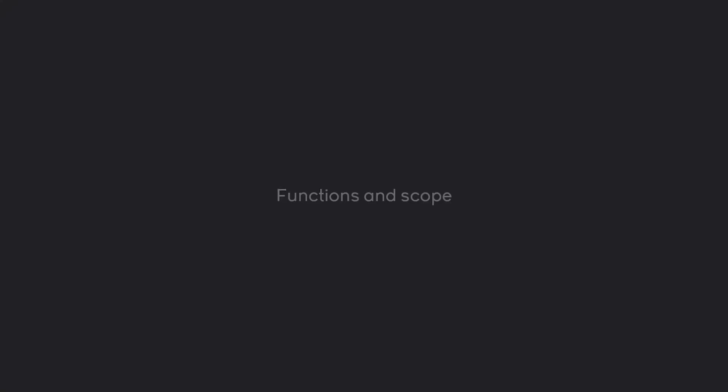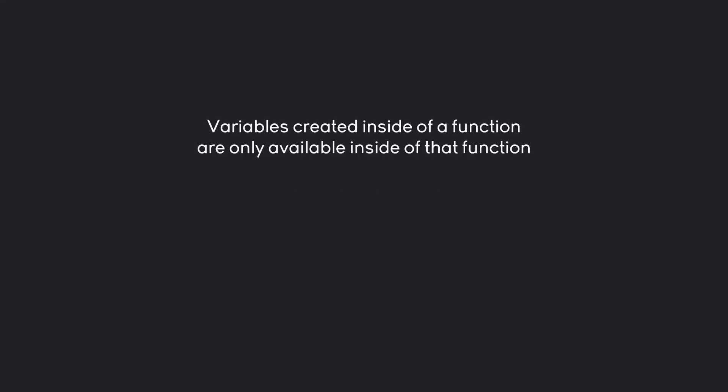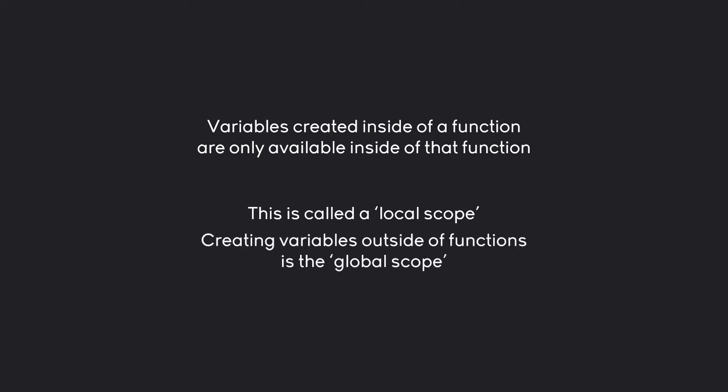Welcome back. In this part we are going to talk about functions and scope, which can be a really annoying but very important topic. Basically what it means is that variables created inside of a function are only available inside of that function. This is called a local scope. If we are creating variables outside of a function, we are creating a variable in the global scope. Let's do this in a more practical way.